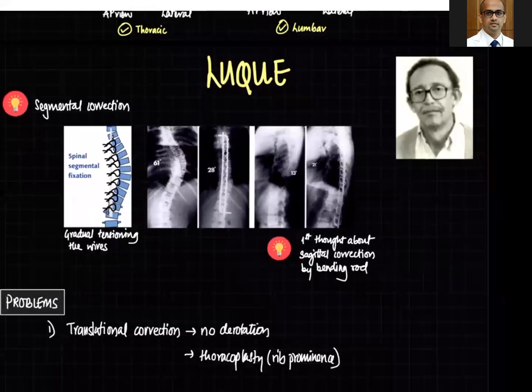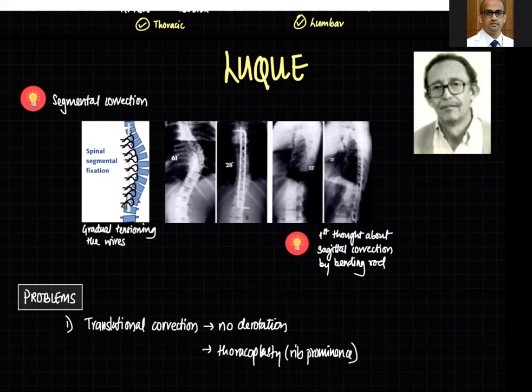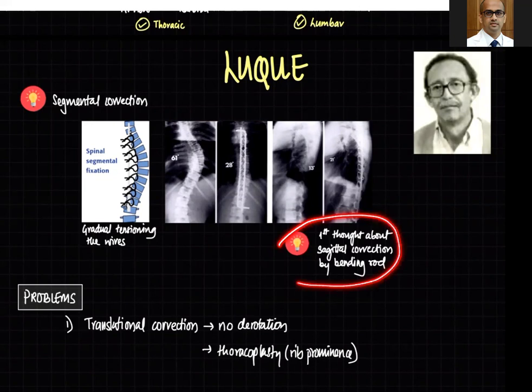The second era was the Luque era, where correction was segmental. You had a rod and then segmentally, with sublaminar wires, the vertebral bodies were translated towards the rod. Luque rods with sublaminar wires translated the spine towards the rod. He also had the first concept of sagittal correction by bending the rod, allowing translation of the column not only in the coronal plane but also in the sagittal plane.